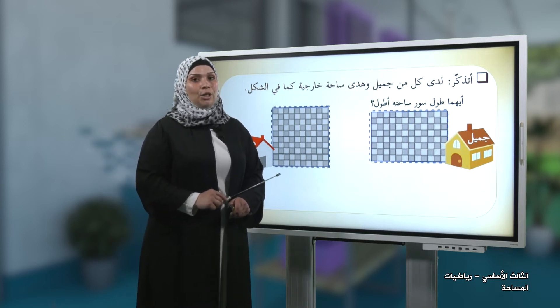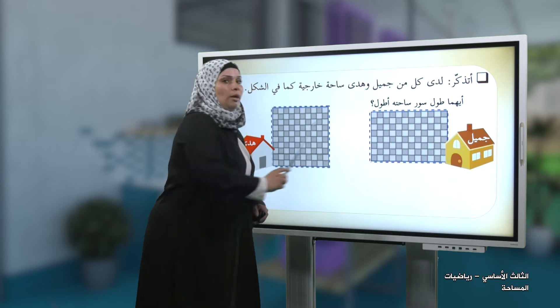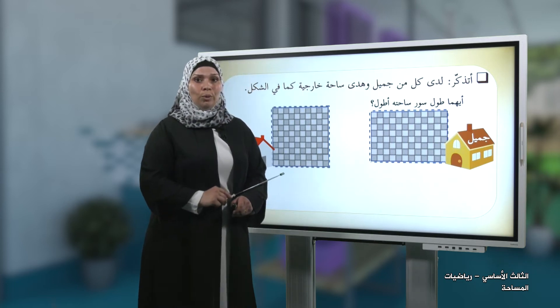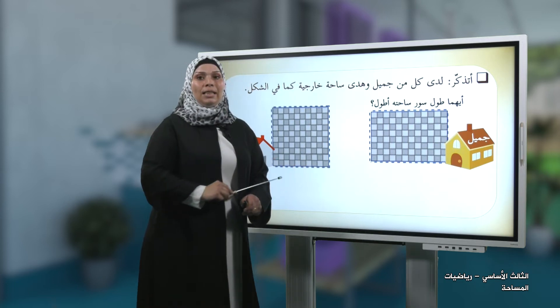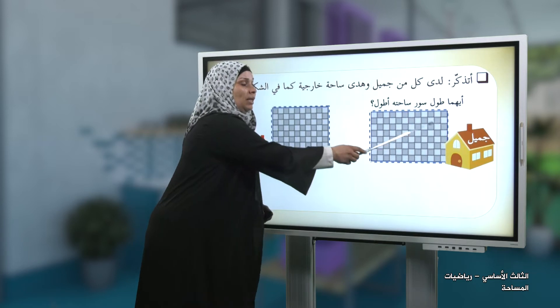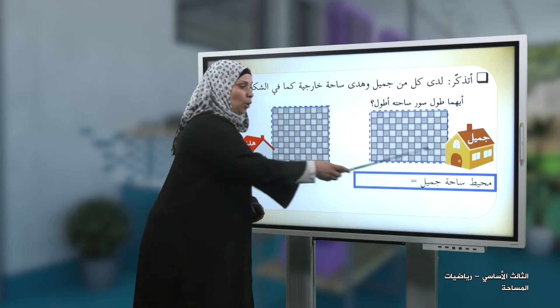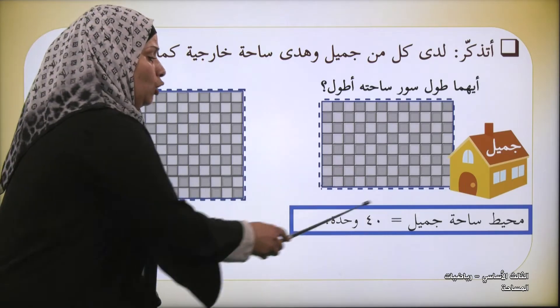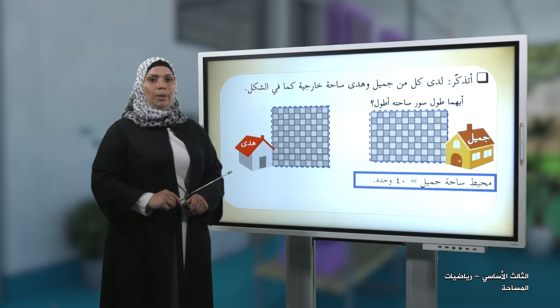هيا بنا نجمع: اثنا عشر واثنا عشر يساوي أربعة وعشرون، وثمانية يساوي اثنان وثلاثون، وثمانية يساوي أربعون. إذن محيط ساحة جميل يساوي أربعون وحدة.